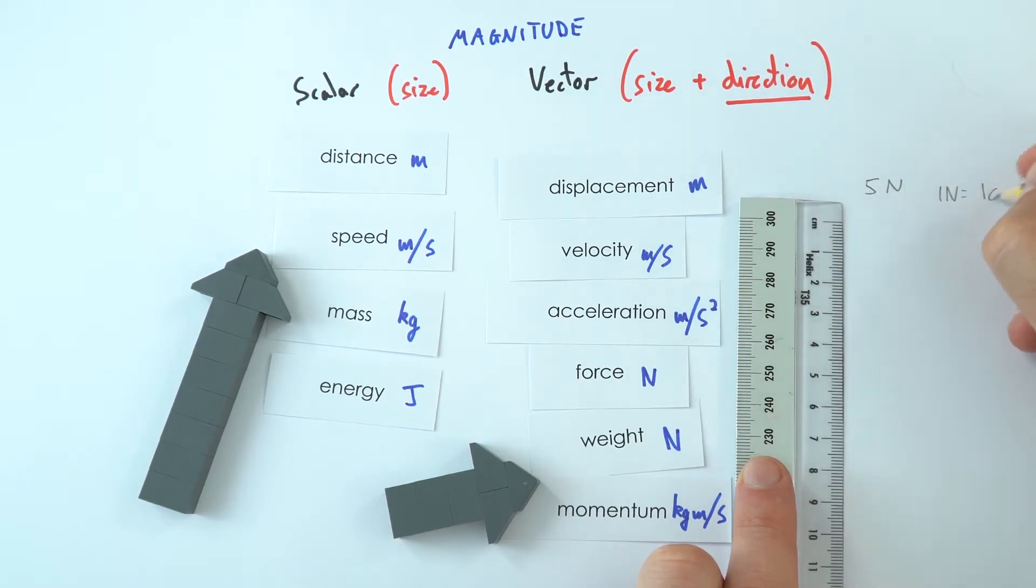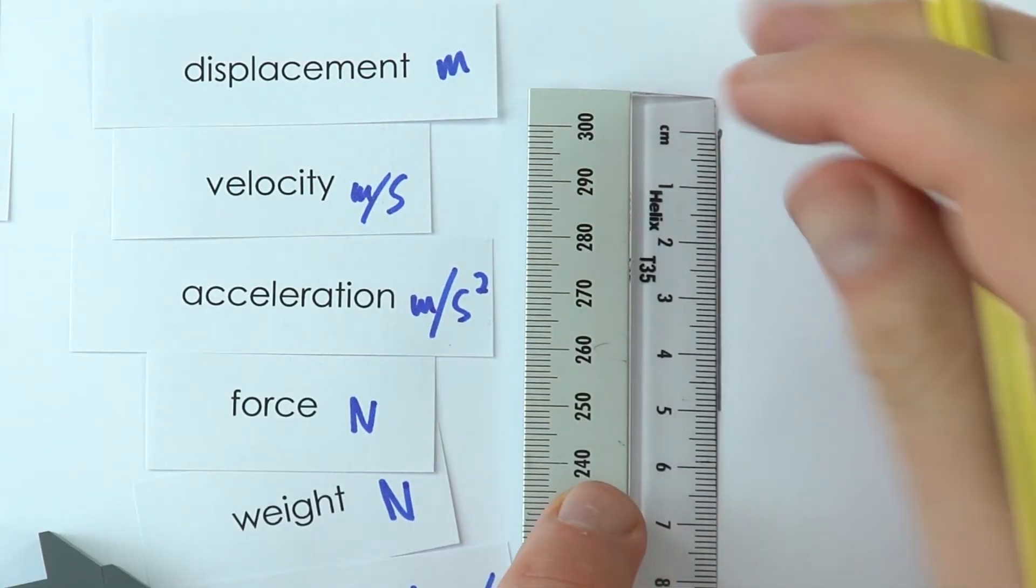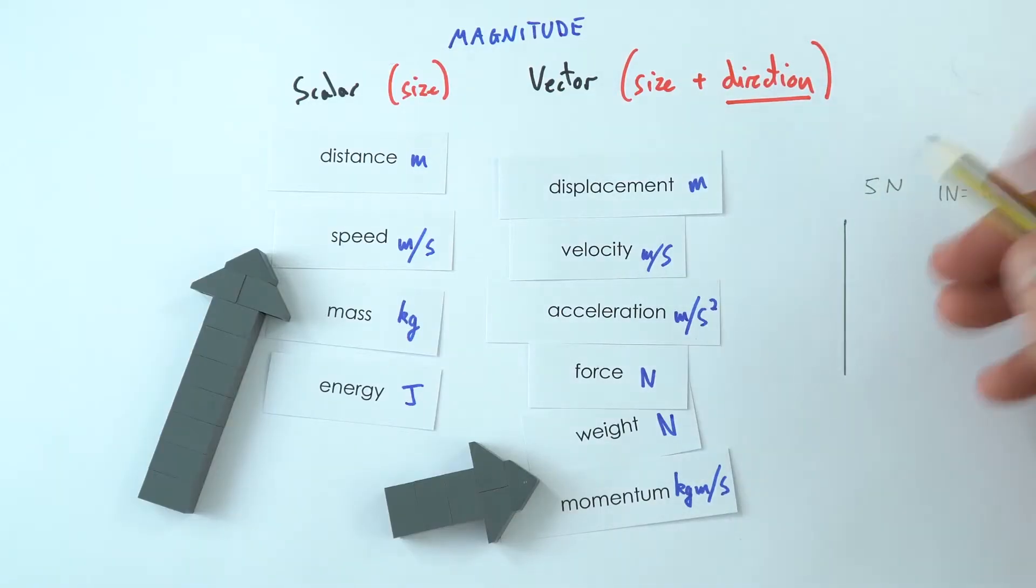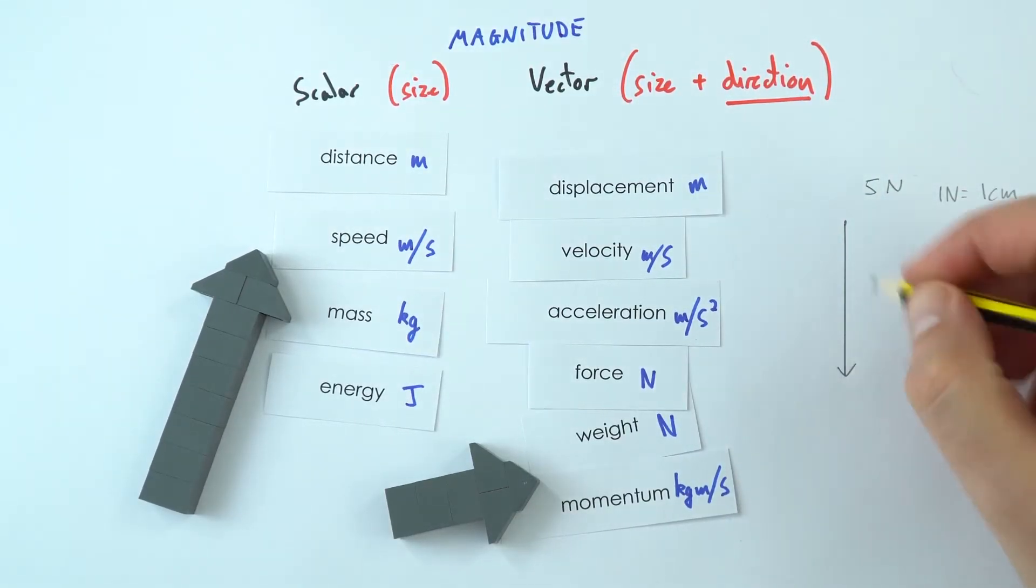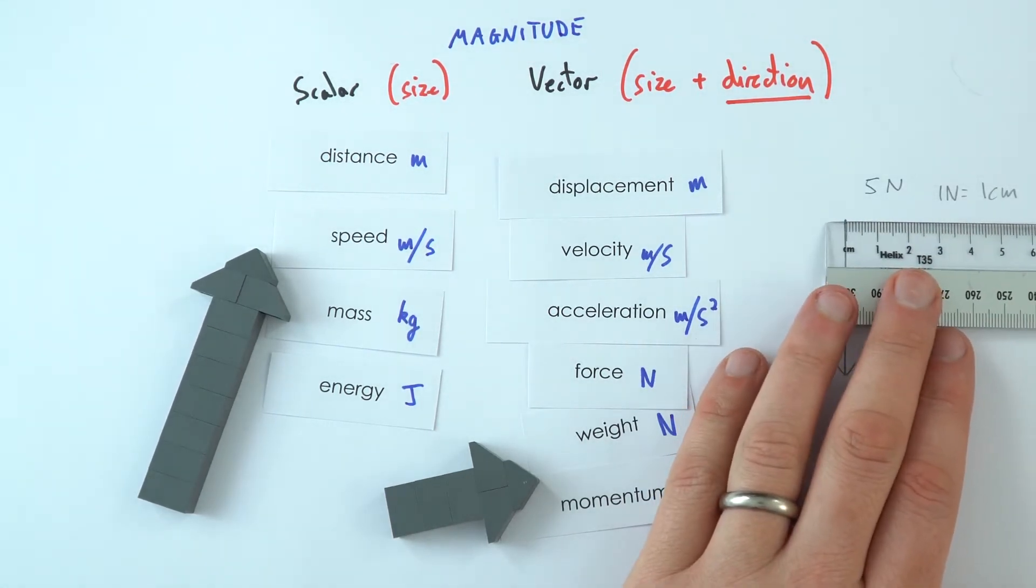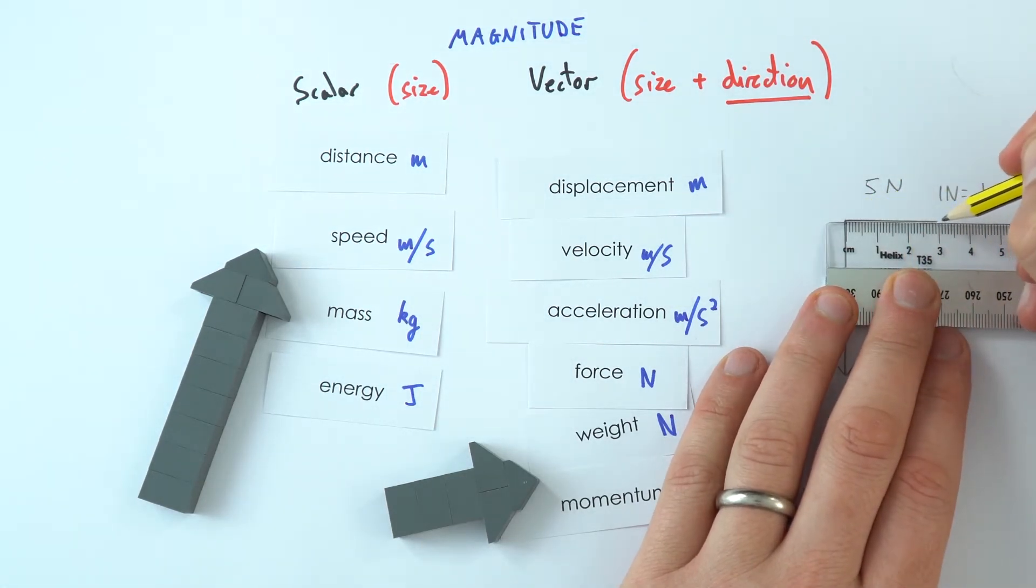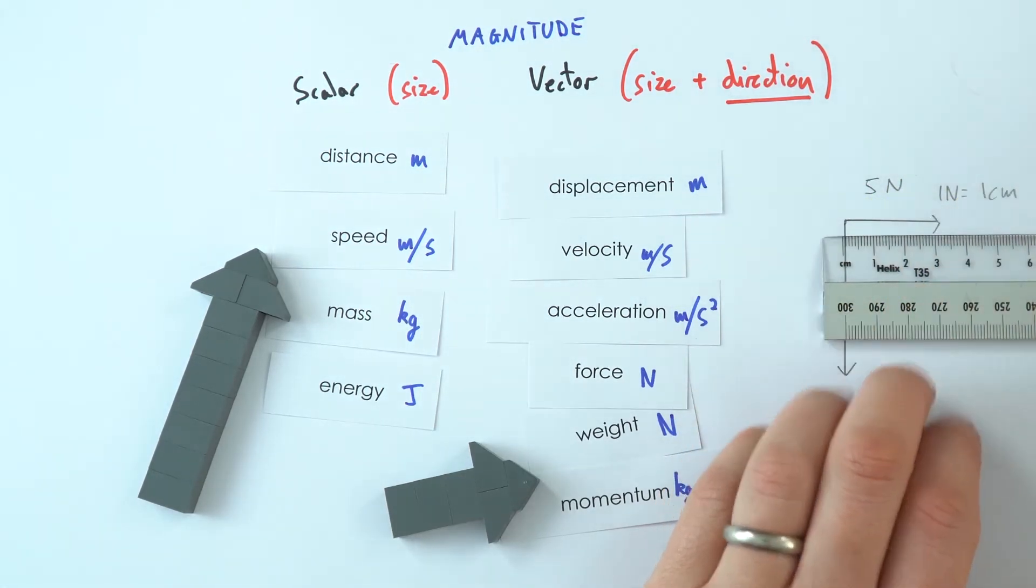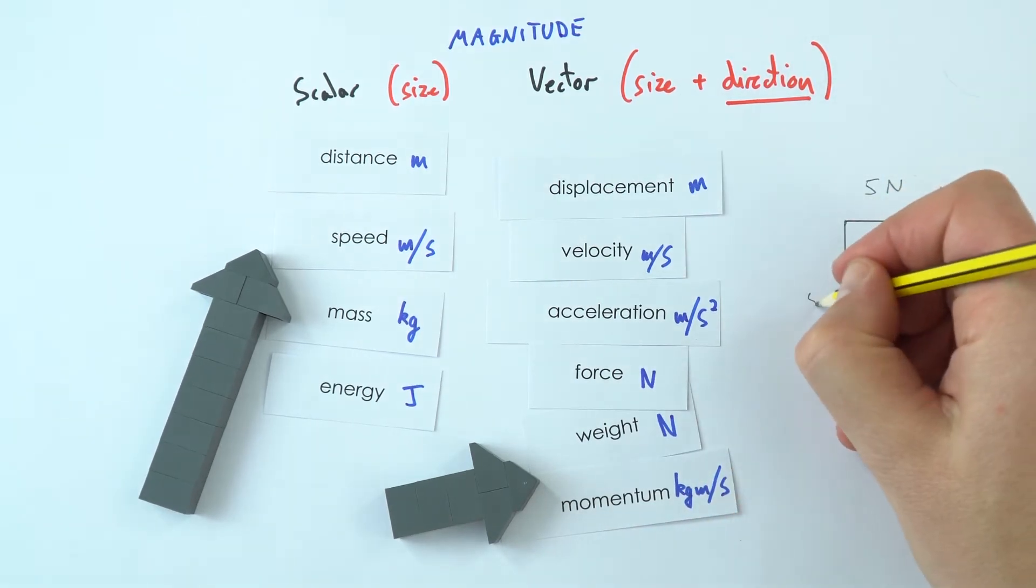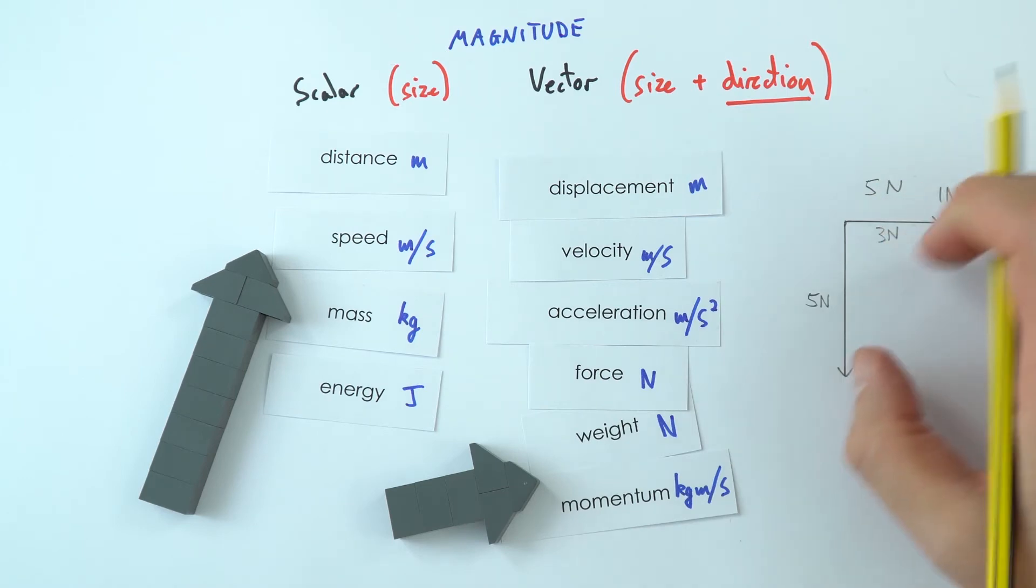Imagine we had a force of five newtons. Well, I might say that one newton is equal to one centimeter when I draw it on a diagram. So if we maybe start here, I can draw this down a nice straight line. I've measured it - this shows that that's five centimeters long, and therefore this might be an arrow that shows a force of five newtons. Perhaps we maybe have a force of three newtons acting to the right, so this might be three centimeters long. And then what we have is maybe a diagram that starts to show a five newton and a three newton force.